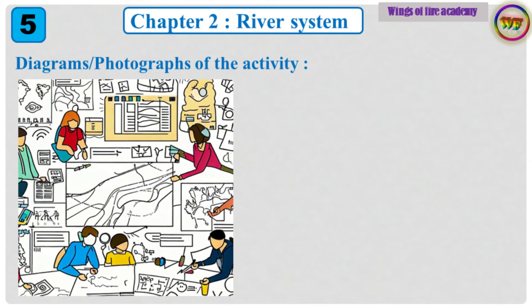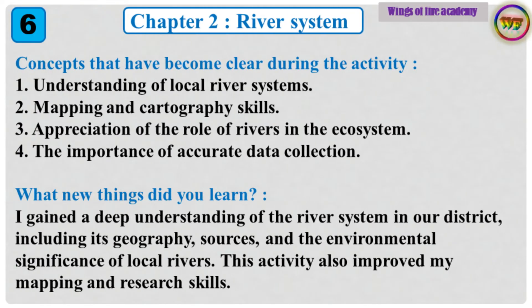Diagrams and Photographs of the Activity: Dear students, draw the given diagram. Concepts that have become clear during the activity: 1. Understanding of local river systems. 2. Mapping and cartography skills. 3. Appreciation of the role of rivers in the ecosystem. 4. The importance of accurate data collection.